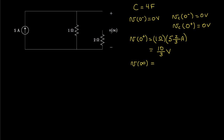The desired voltage at infinity: all of this current, since we now have an open capacitor, is going to flow through the 1-ohm resistor. So the voltage from one terminal to the other will be the voltage across that 1-ohm resistor, which is 5 amps times 1 ohm — so 5 volts. So the desired voltage just before we open the switch is 0, just after is 10/3, and ultimately it'll attain a voltage of 5 volts.